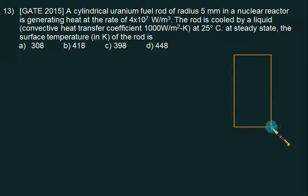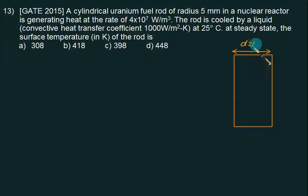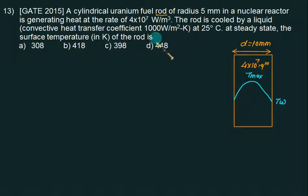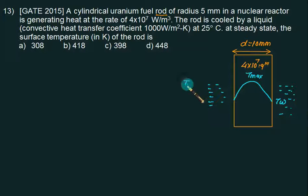This question is based on heat generation in a cylindrical uranium rod, which is a solid of radius equal to 5 mm, so diameter is 10 mm. The heat generation rate is Q‴ = 4×10⁷ W/m³. Since it's a rod, we have a downward parabolic temperature distribution with both surface temperatures the same — T_W at the surface and T_max at the center. The surrounding convective environment has H equal to 1000 W/m²K and fluid temperature T∞ equal to 25°C.